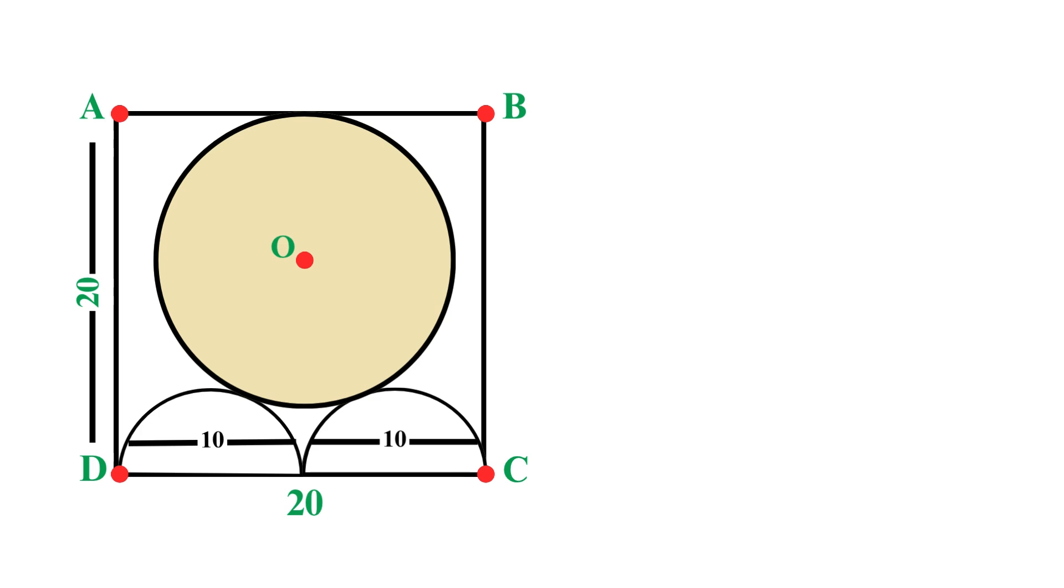And since the radius is half the diameter, each semicircle has a radius of 10 divided by 2, which equals 5 units. Now, let's focus on the right semicircle and add some labels. We label the center of this semicircle as P, and the leftmost point of the right semicircle as Q. Notice that this point Q is also the midpoint of side CD, right in the middle of our square's bottom side.